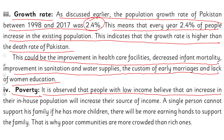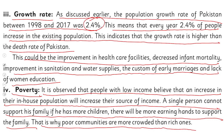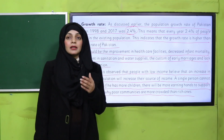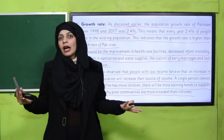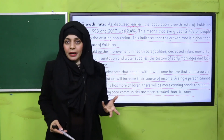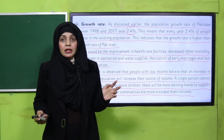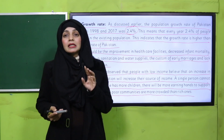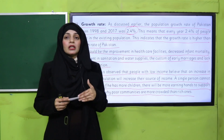The next factor is poverty. It is observed that people with low income believe that an increase in their in-house population will increase their source of income — if they have more children there will be more earning hands to support the family. That is why poor communities are more crowded than rich ones. Lekin ye soch galat hai — agar ghar ki abadi zyada ho jayegi to wasail nahi badhenge, masail mein izafah ho jayega. Itne sare logon ko khana, kapra, education, healthcare sab deni hai.